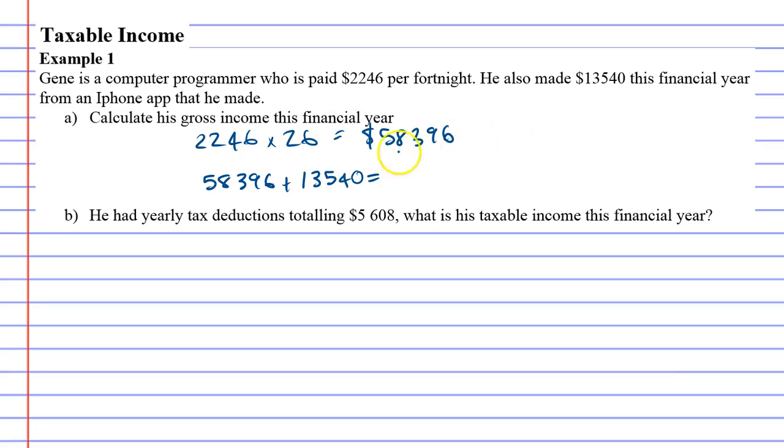Alright, so Gene makes $71,936 gross per year. That's question A down. Now if we move on to question B.